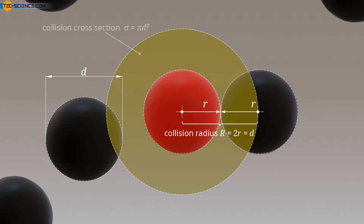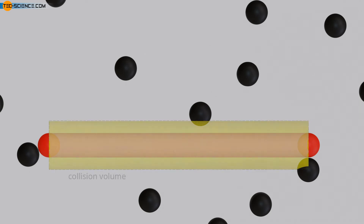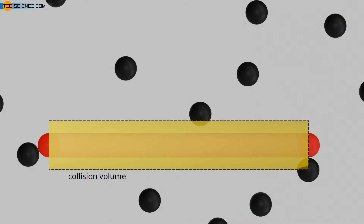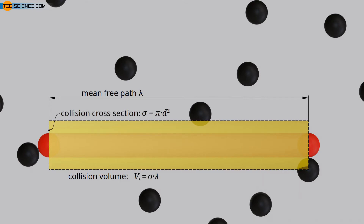A collision between the moving molecule and a resting particle will occur when the surfaces of the spherical particles touch each other — this will be the case if the distance of the centers of gravity is smaller than twice the radius of the molecules. Thus, a circular collision cross-section σ perpendicular to the direction of motion can be defined around the center of gravity of the moving molecule, within which the center of gravity of the resting particle must lie for a collision to occur. The radius of this circular surface corresponds exactly to the diameter of the gas molecules, and this collision cross-section can be determined with the shown formula. In the direction of motion, an imaginary collision volume in the form of a cylinder is obtained. If the center of gravity of a particle is within this cylinder, a collision will occur. The length of the collision cylinder corresponds to the free path λ. The volume of the collision cylinder Vc results from the product of the collision cross-section σ and the length of the free path λ.